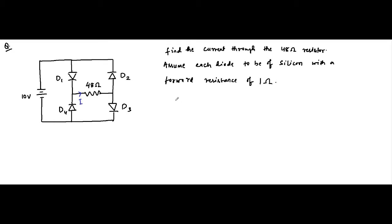The important information is that diodes D1 to D4 are silicon diodes, which means a 0.7 volt barrier potential. Then forward resistance is how much? 1 ohm. Forward resistance is 1 ohm. These two pieces of important information are what we need to consider.